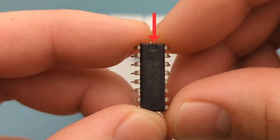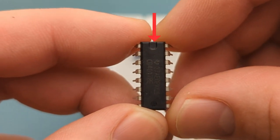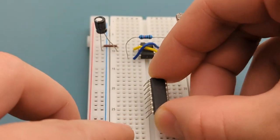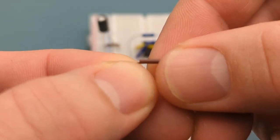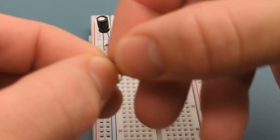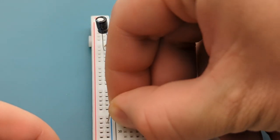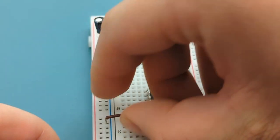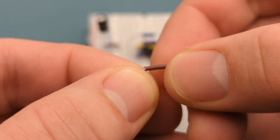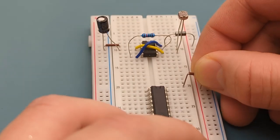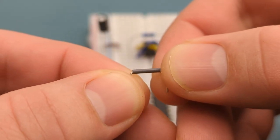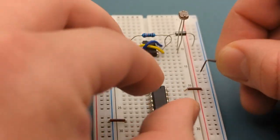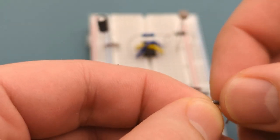The notch or dot of the CD4017 should be at the top. Insert the CD4017 in the middle of the breadboard. Insert a jumper wire into pin 8 and the negative rail. Insert a jumper wire into pin 16 and the positive rail. Insert a jumper wire into pin 15 and the negative rail. Insert a jumper wire into pin 13 and the negative rail.